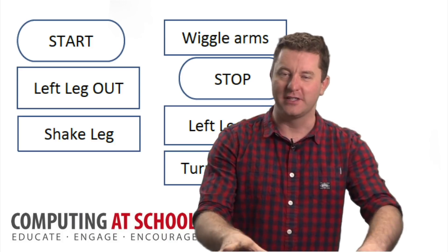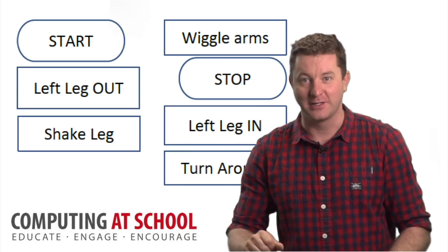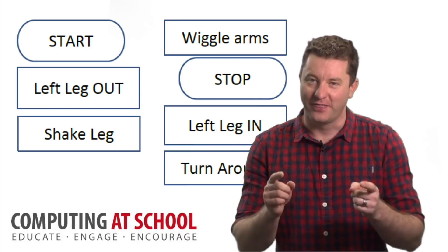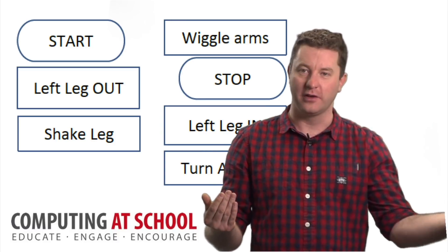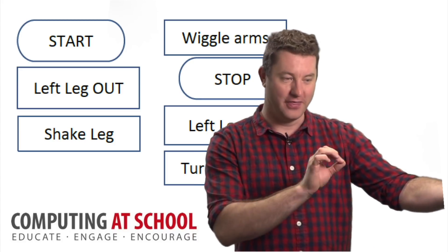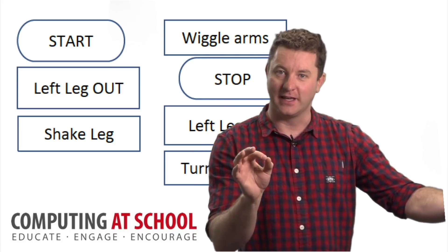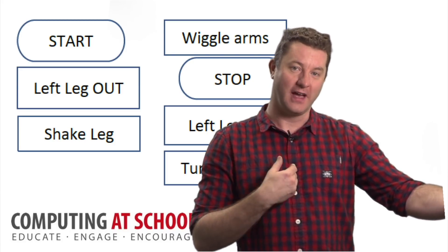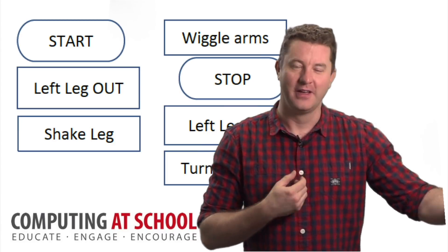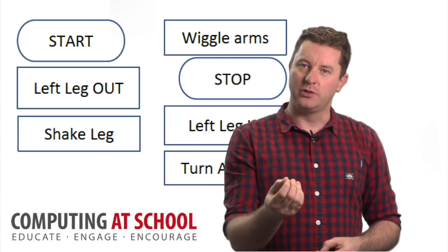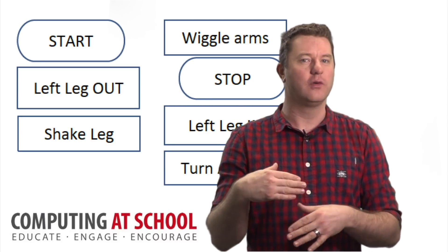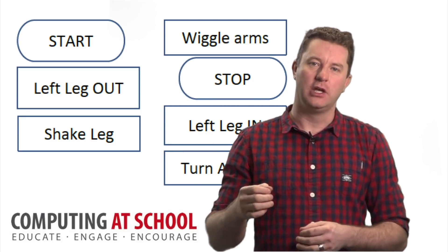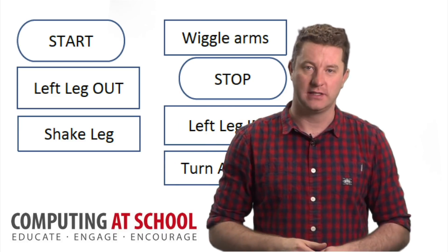Then, once the children have written their instructions of how to do the hokey-cokey, then there's the fun part. You can get them to read it to another group, where the other group has to follow their instructions to the letter. You could even take part in that as well, if you're feeling brave. The idea of this is to show children the exact preciseness needed. And obviously with a higher ability, you would want that preciseness to be even more detailed.